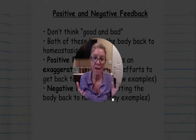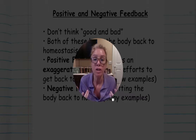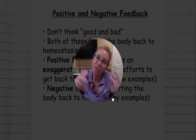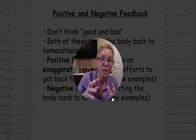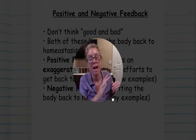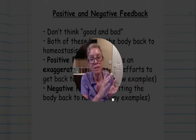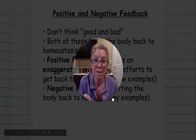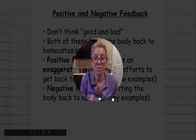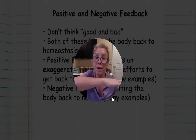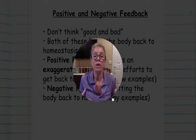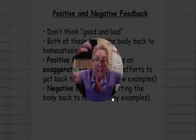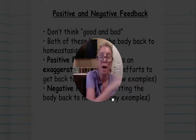A classic example of negative feedback is cruise control in your car set at 65 mph: if you go downhill and speed up, brakes are applied; if you go uphill and slow down, more fuel is given. In our bodies, blood sugar works this way — if glucose gets too low, glucagon is secreted by the pancreas to elevate it; if glucose gets too high, insulin brings it back down.